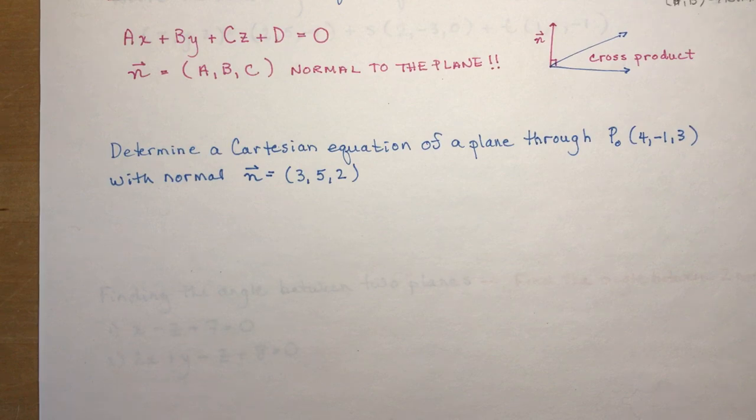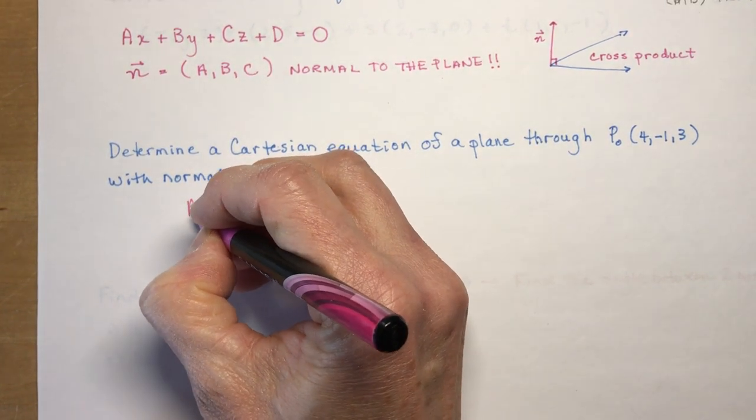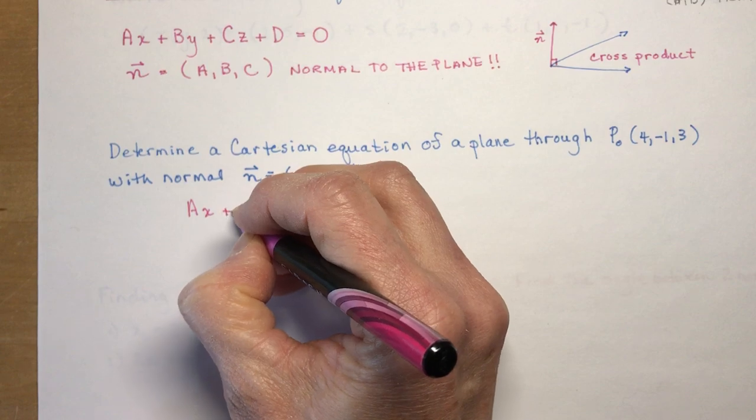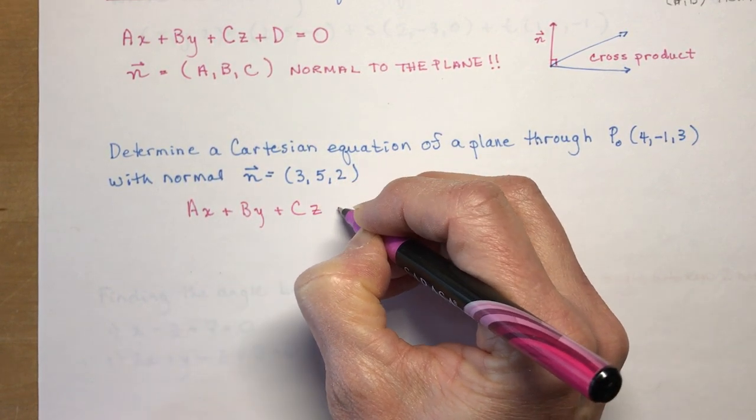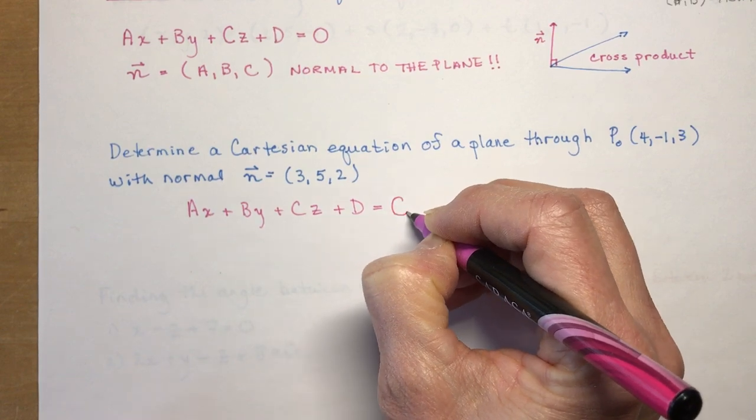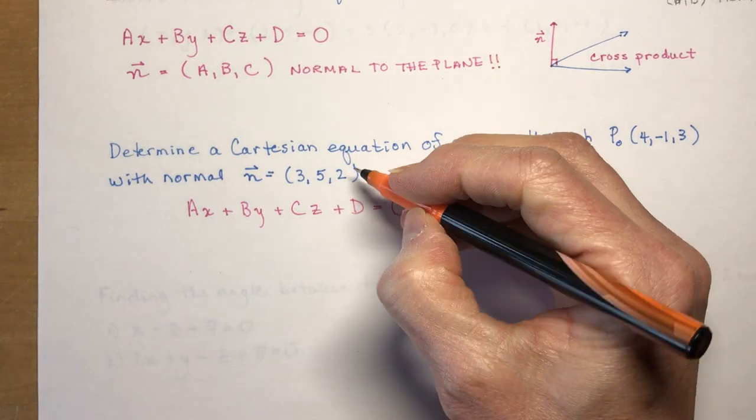All you have to do, and I'm going to write it out in pink first, I'm going to write out the equation. The Cartesian equation is ax plus by plus cz plus d is equal to 0. And what you're going to need to find is d. So this is what you're going to be solving for. I'm going to find d.